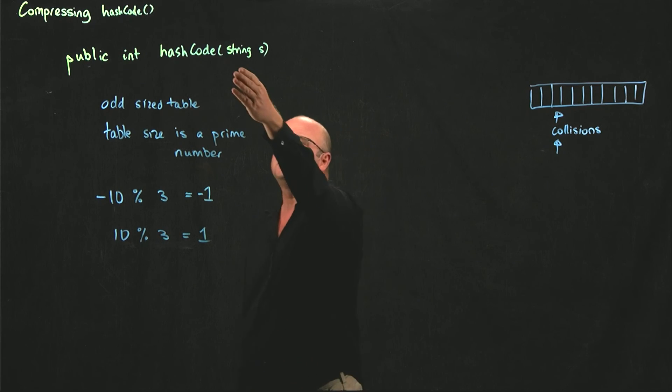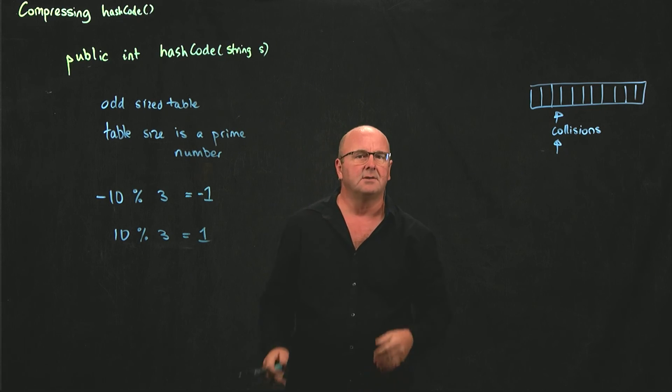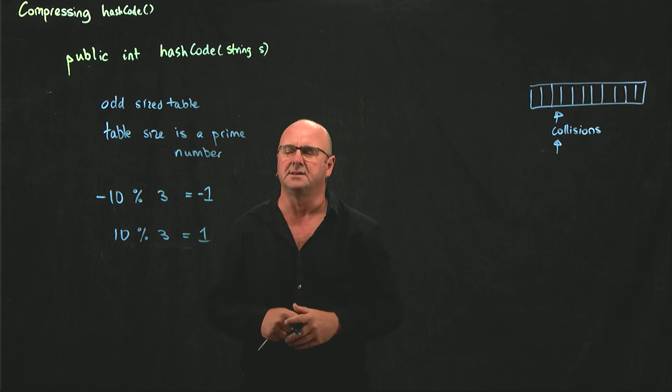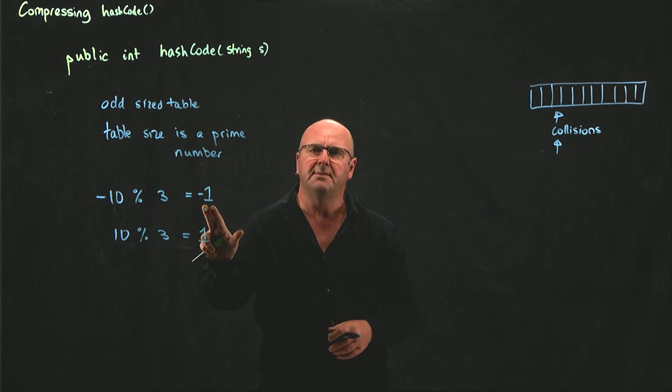So if our integer that's returned from our hash code function is a negative number, which is totally allowable because integers can be negative, when we try and do the modulo, we may end up with a negative number.